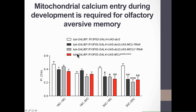In this experiment, we took advantage of the temperature-sensitive form of the GAL4 inhibitor GAL80, which allowed us to repress UAS-insertion expression when flies are at 18°C and to activate expression by moving flies to 30°C. What we observed, to our big surprise, was that silencing MCU, silencing MICU1, or expressing a dominant negative form of the channel just during development — but not in adult flies — was sufficient to cause the same three-hour memory decrease observed when these genetic insults were present both during development and in adult flies.